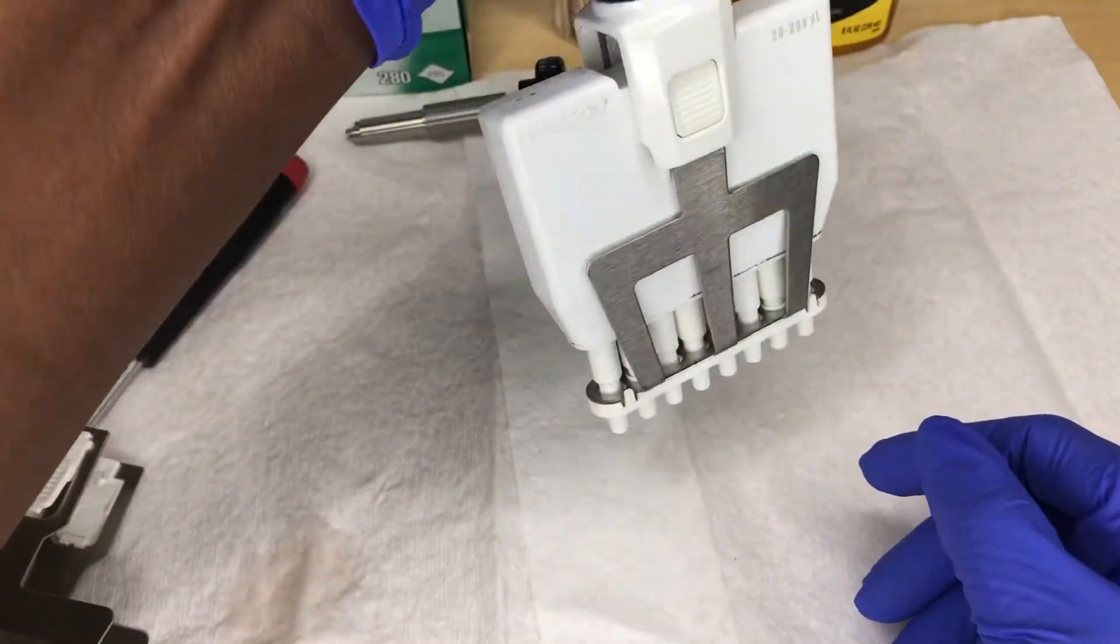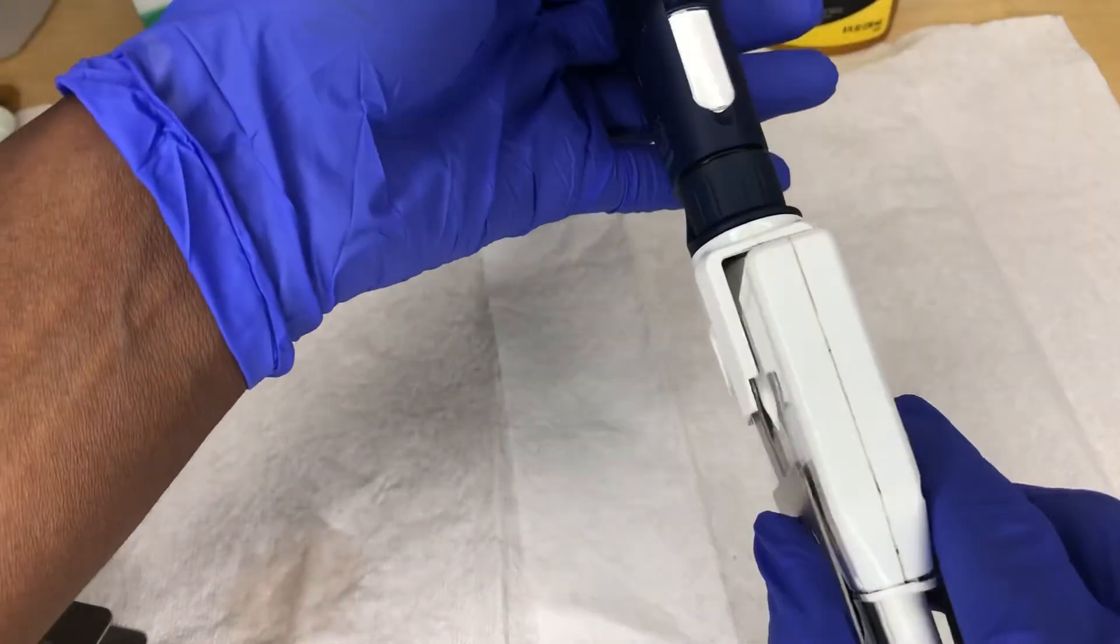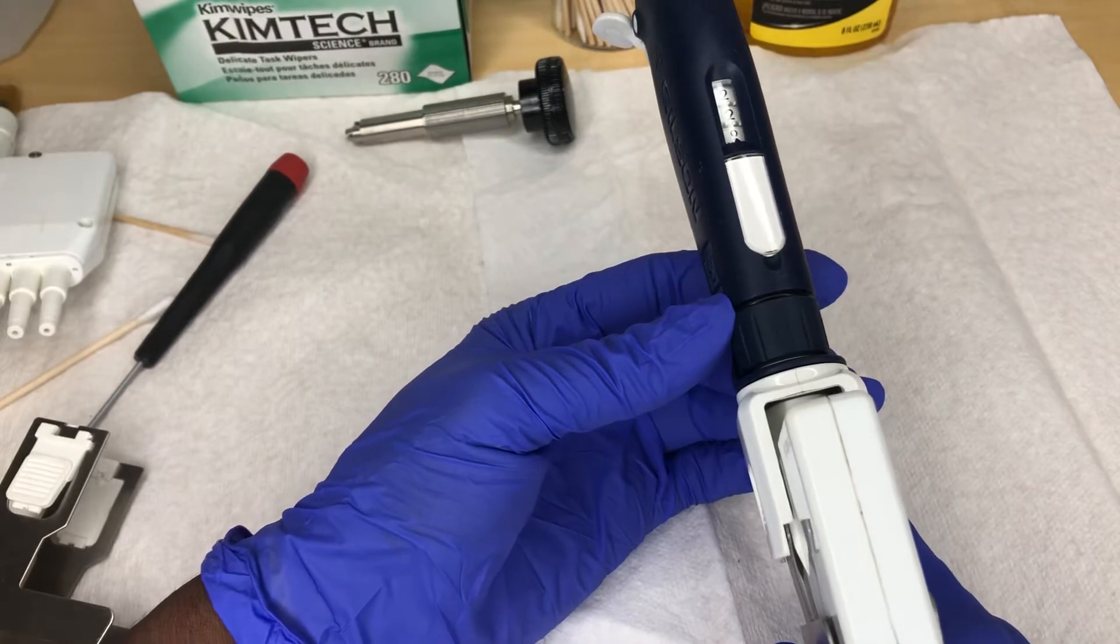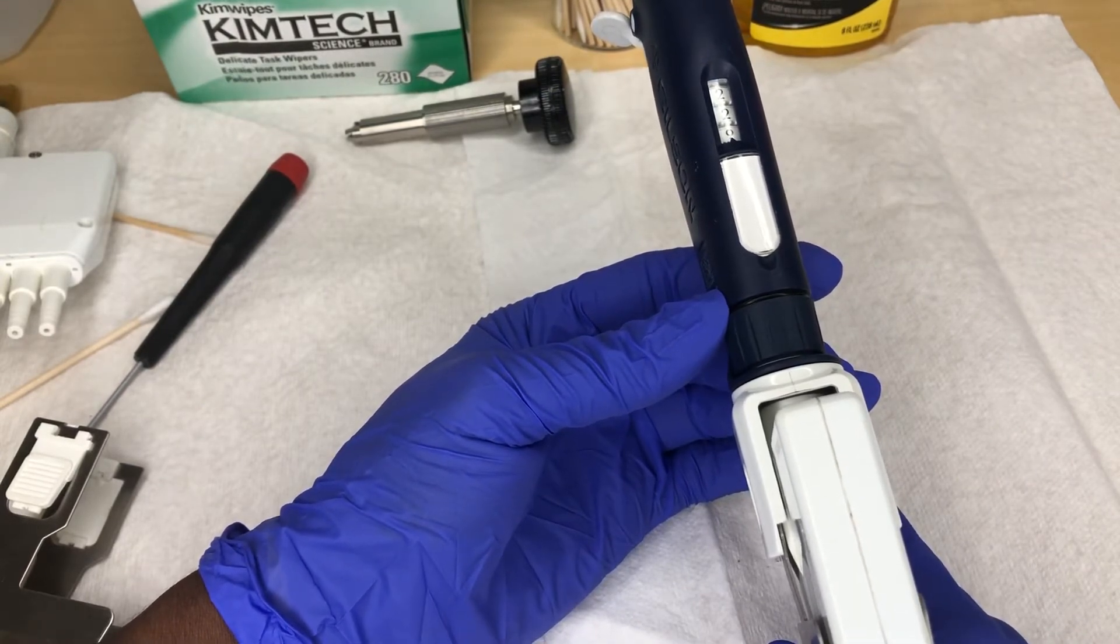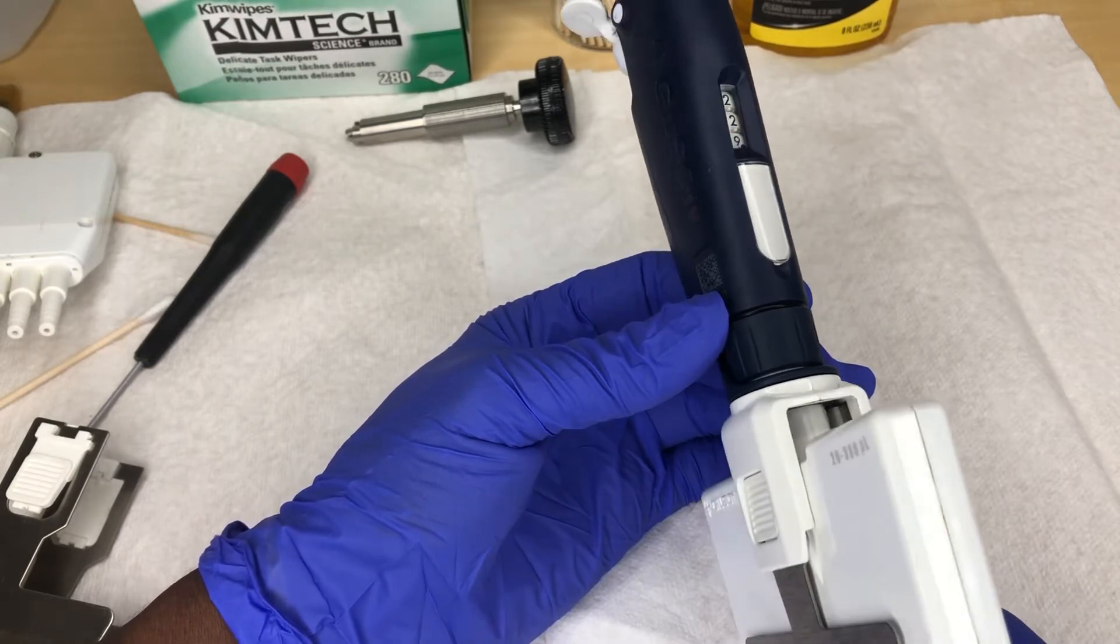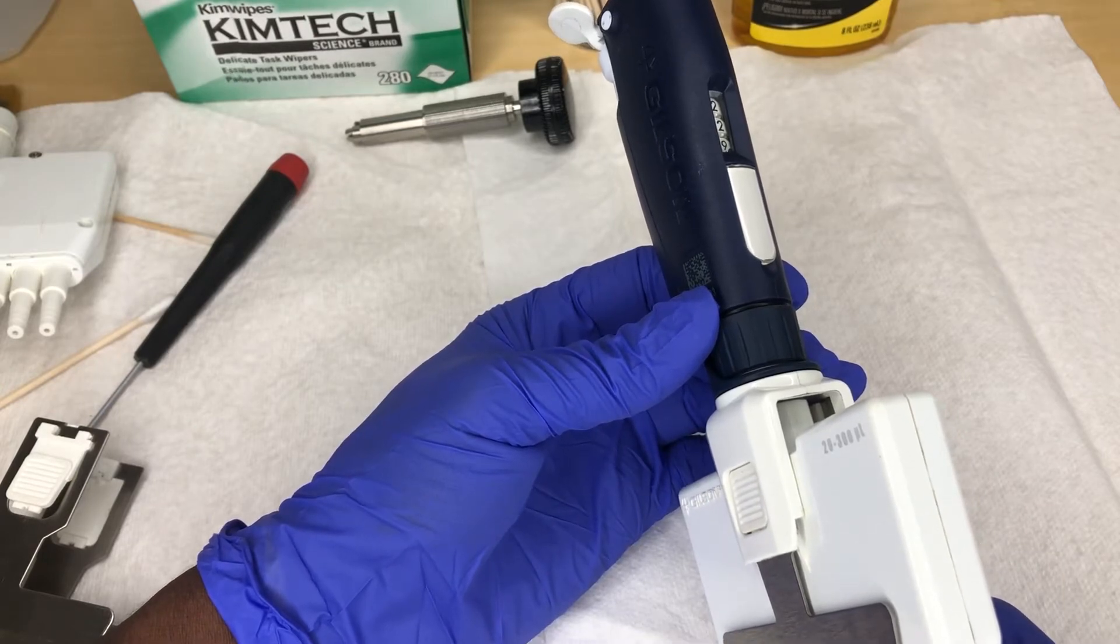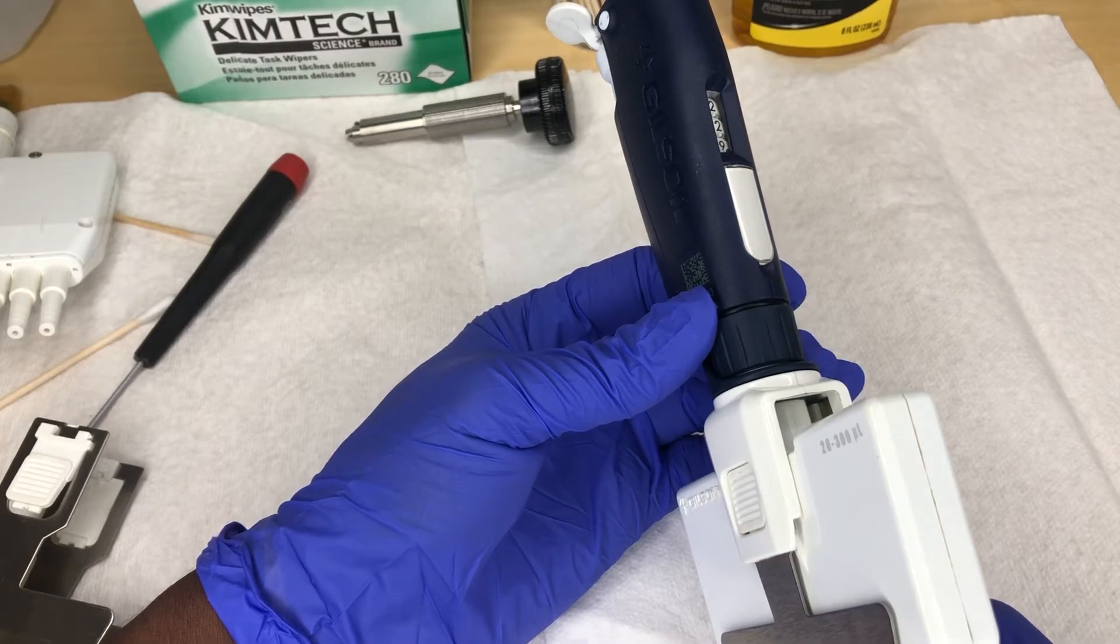So you will take your readings: aspirate, dispense, aspirate, dispense. Of course, you set it to the nominal volume and aspirate and dispense for five times according to our SOP 750103. Once you're done with that, you can go ahead and take your first reading on the lower volume, and then the mid volume and the high volume. If for some reason it is out of tolerance, you would use this tool.